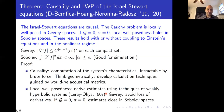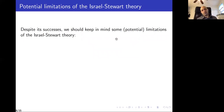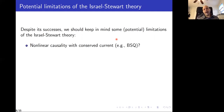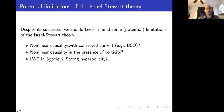The message is that Israel-Stewart now has all the good properties we already knew, and we show it is causal with local well-posedness in Gevrey or Sobolev spaces. But we should keep in mind some potential limitations. Our nonlinear causality result does not apply in the case with conserved currents. We also don't know if the result holds in the presence of vorticity. We still don't know if the equations are strongly hyperbolic, which is important for numerical simulations.